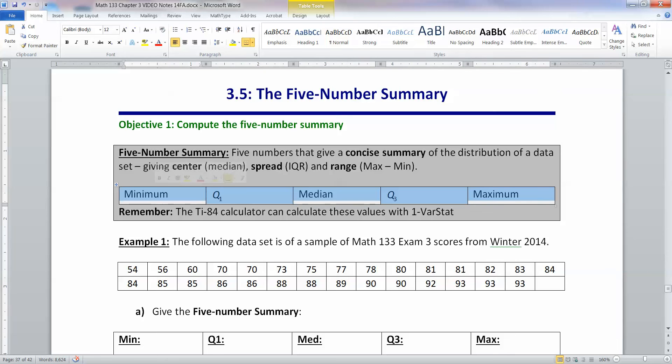There are five numbers that really give you a very concise summary of the distribution of a data set. They tell you the center, which would be the median. They tell you the spread, which is the IQR and the range, the minimum to the maximum. The only thing you don't quite get from it is the shape, which will be coming soon in a different kind of graph.